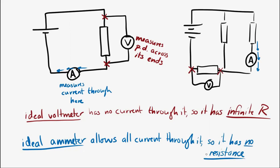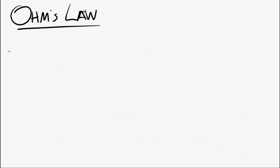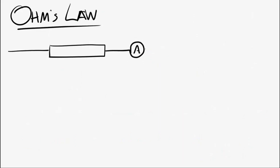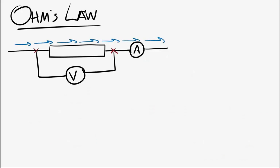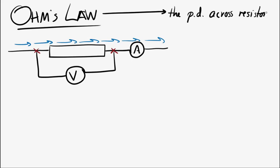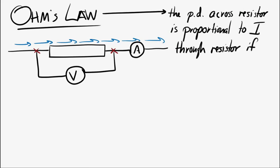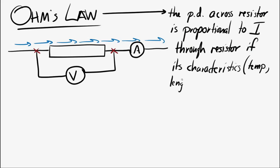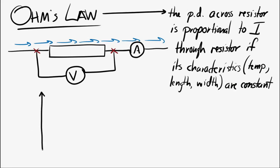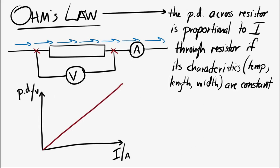Now let's look at Ohm's Law. Imagine we have a single resistor with an ammeter placed to measure the current going through it and a voltmeter placed to measure the potential difference across the resistor. Ohm's Law states that the potential difference across an object is proportional to the current through the object, as long as the resistor's characteristics — temperature, radius, length, physical characteristics — are constant. If we draw a graph of potential difference versus current, we should get a straight line.